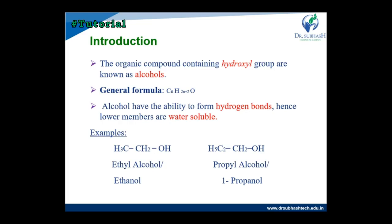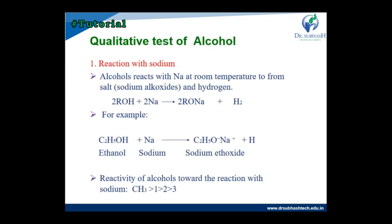The general formula of the alcohol is CnH2n+2O. Alcohol has a good ability to form the hydrogen bond and lower members are water soluble. Some examples of the alcohol are ethyl alcohol and propyl alcohol. The IUPAC name of ethyl alcohol is ethanol and propyl alcohol's IUPAC name is propanol.